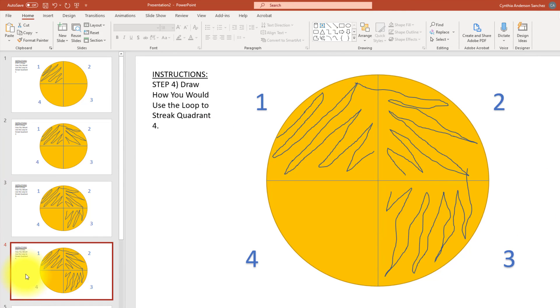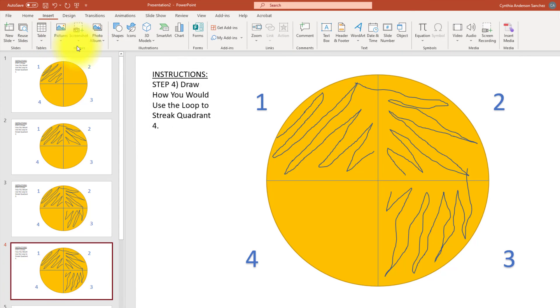Step four, draw how you would use the loop to streak quadrant four. Insert, Shapes, Scribble, dragging a small amount from quadrant three into quadrant four. And don't forget that we would be flaming the loop in between each of these quadrants.